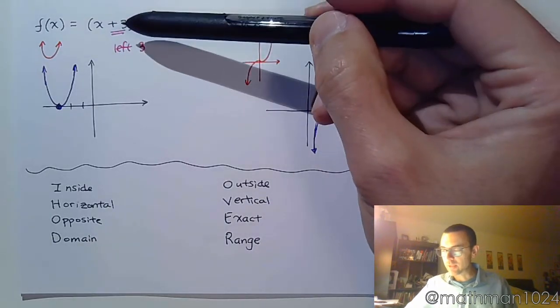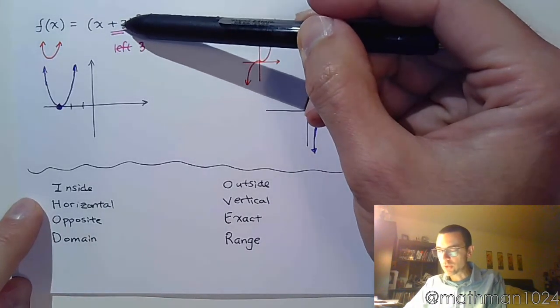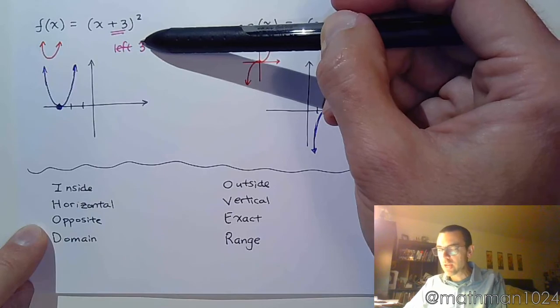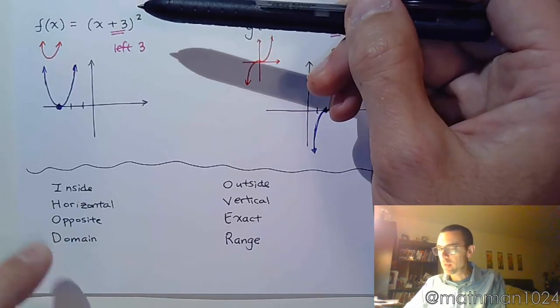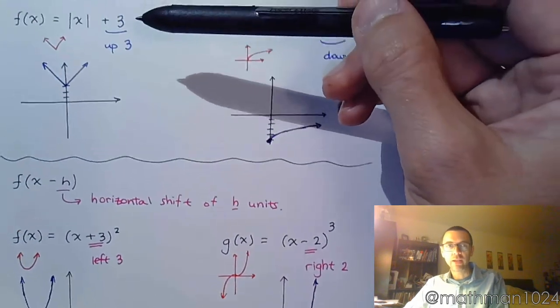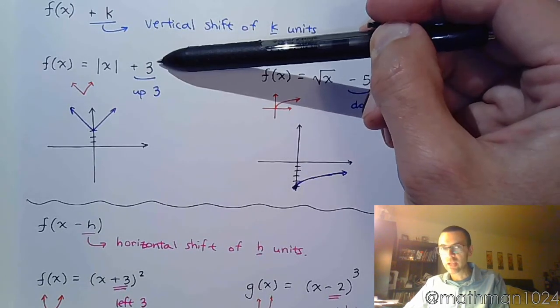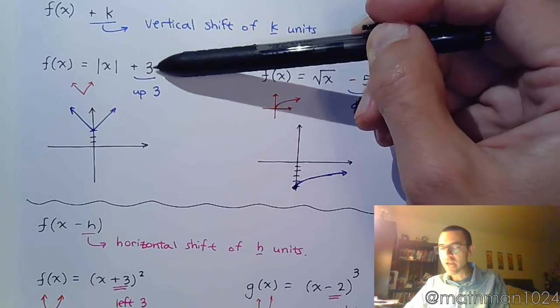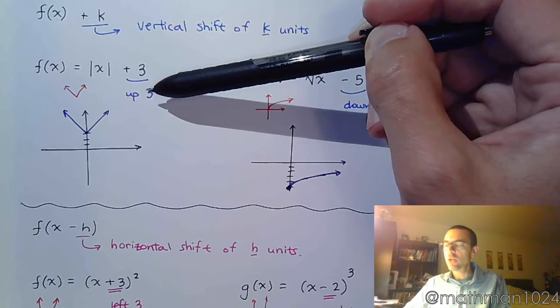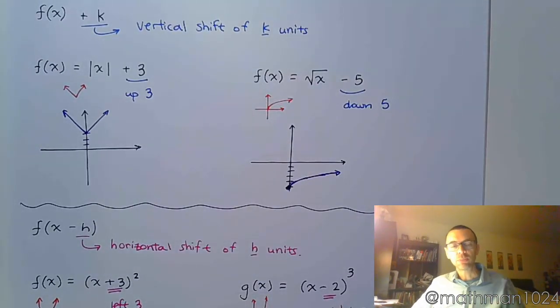So in the last examples, we had things that were inside. They were horizontal, opposite of what I saw, and it could affect your domain. The first few examples we had, you had the change that was being done outside. It was a vertical shift, and you did exactly what you saw. So let's take these ideas, and let's apply them to some more complicated examples, and we're also going to go for accuracy. So make sure that you have graph paper, make sure that you've printed some off, or you have your own graph paper, and let's plot and graph for accuracy.